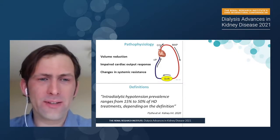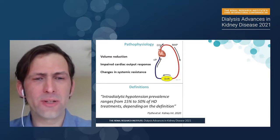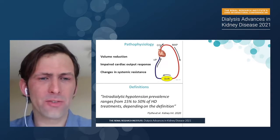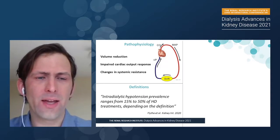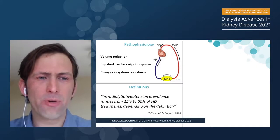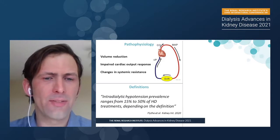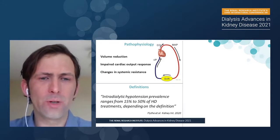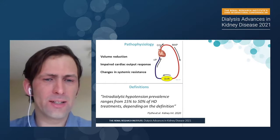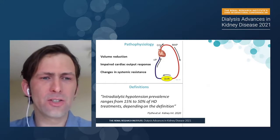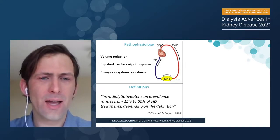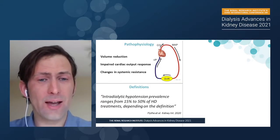When we look at the definitions of intradialytic hypertension, it's very common to see in the literature statements about prevalence ranging from 15 to 50 percent of dialysis treatments, and this can vary significantly depending on which paper you read. This really highlights the issues we have in defining and getting a good grasp of what we are defining intradialytic hypertension as.